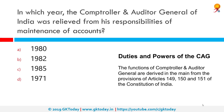In which year was the Comptroller and Auditor General of India relieved from his responsibility of maintenance of accounts? The correct answer is 1971. Today the CAG is responsible for the audit of the financial transactions of the Union and state governments and union territories.